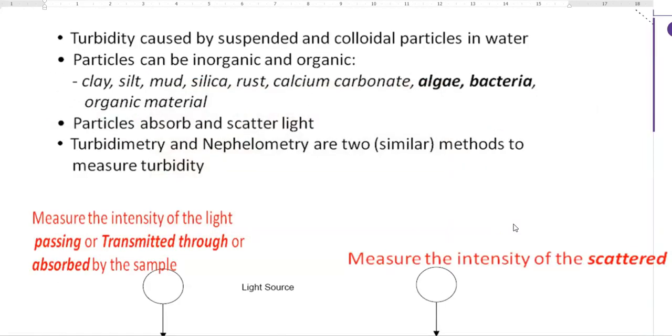Now, we look at points specific to turbidometry. Turbidity is caused mainly by suspended or colloidal particles present in water. The particles may be of inorganic or organic nature. Inorganic refers to clay, silt, mud, silica, rust, calcium carbonate particles. The organic components refer to algae, bacteria, and even direct presence of certain organic material. These particles absorb and scatter light.